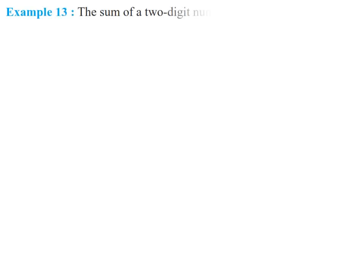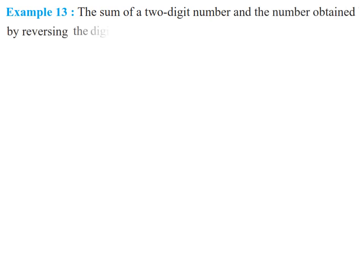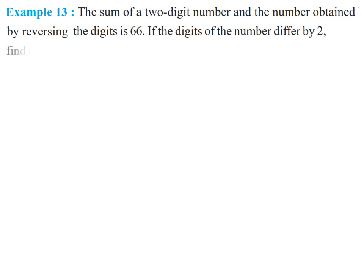Now, the next example is example number 13. The sum of a two-digit number and the number obtained by reversing its digits is 66. The digits of the number differ by 2. Find the number and how many such numbers there are.